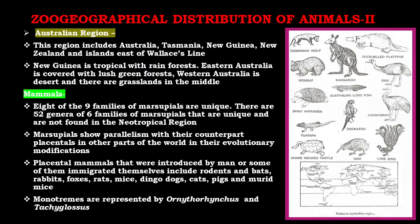The next region is the Australian region, and this region includes Australia, Tasmania, New Guinea, New Zealand, and islands east of the Wallace line. Here you can see in the plate that this is the Australian region. New Guinea is tropical with rainforest; eastern Australia is covered with lush green forest; western Australia is desert; and there are grasslands in the middle.